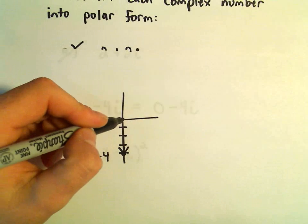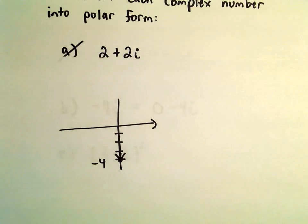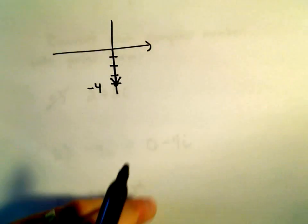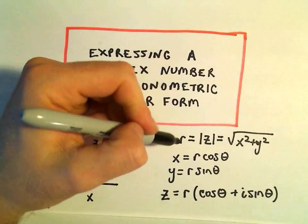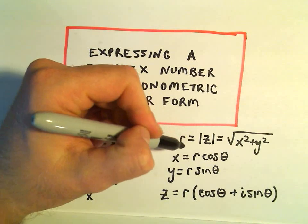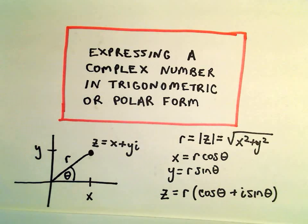So there would be our complex number just sitting on the negative y-axis. Well, we can always go back and start using our formulas in this case. What we need to do is we have to figure out the value for r. We have to think about the angle theta that's being made here.